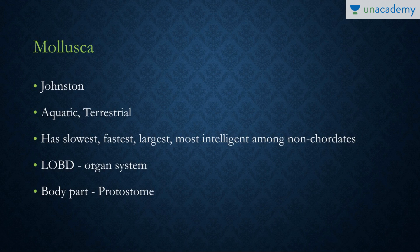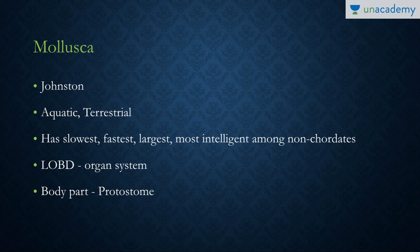Let's dive right into it. Mollusca are basically the second most successful phylum in the animal kingdom in terms of species. They were first described by Johnson. Regarding habitat, they can be either aquatic or terrestrial. They consist of the fastest, the slowest, the largest, and the most intelligent among the non-chordates.